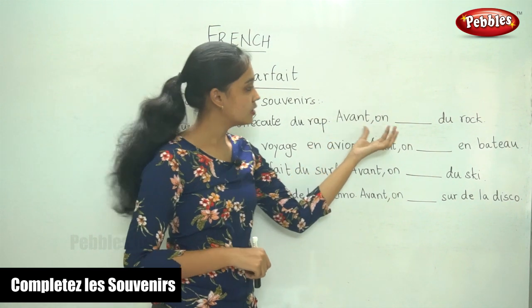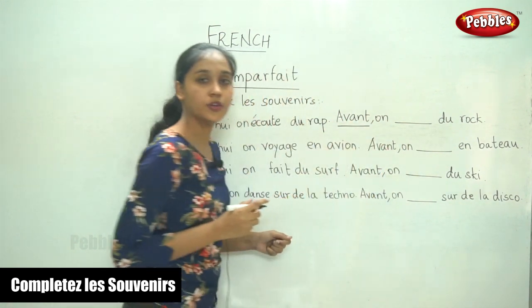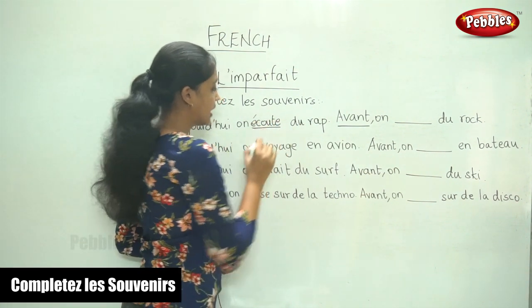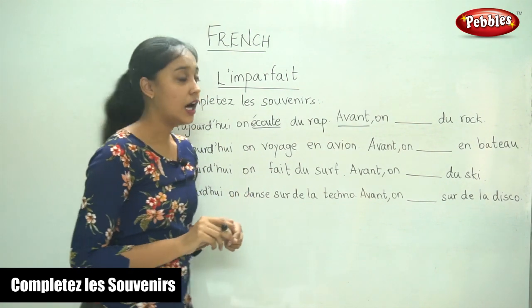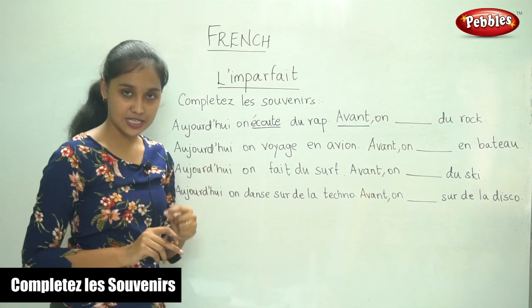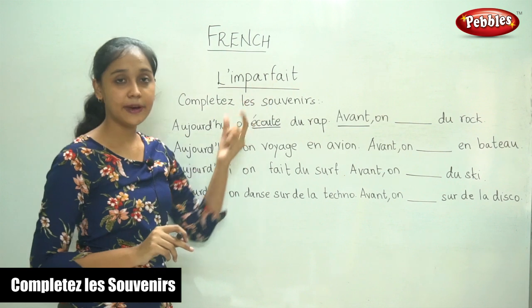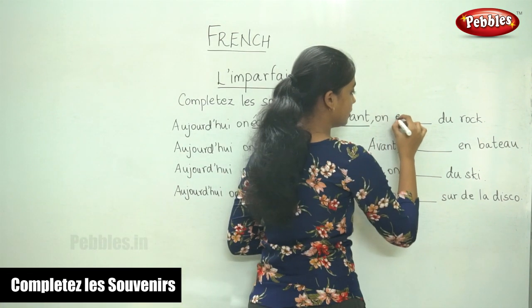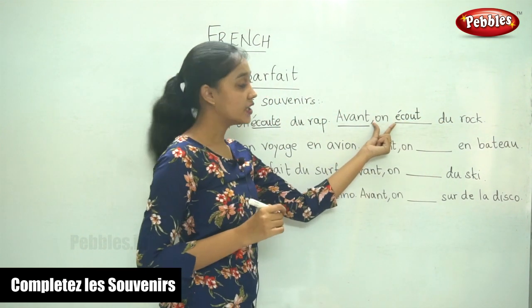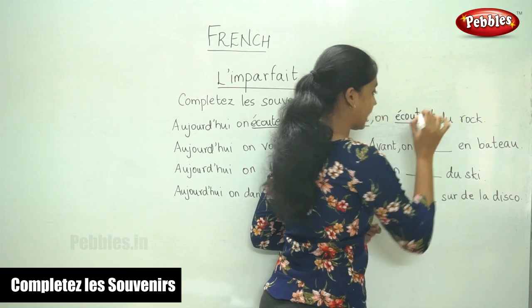Avant — before — on, dash, du rap. This word 'avant' (before) indicates that it is in the past tense. So the verb here is 'écoute.' Now how will we write imparfait? We write the nous conjugation of the verb in the present tense, remove -ons, and add the imparfait endings. So écoute — and here the subject is third person singular, so the ending is -ait.